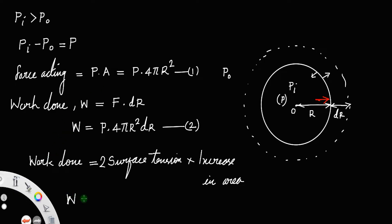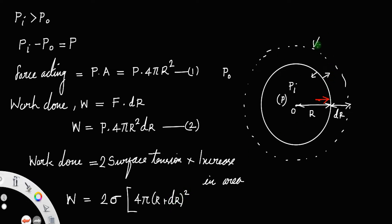Therefore, the work done is equal to 2 times sigma times the increase in surface area. The final area is 4π(r + dr)² and the initial surface area is 4πr². So the increase in area is 4π(r + dr)² − 4πr².